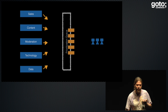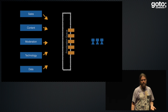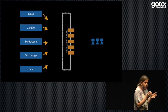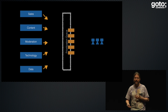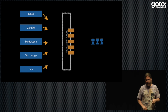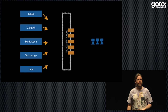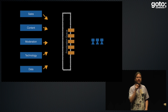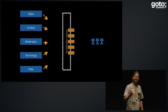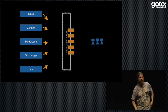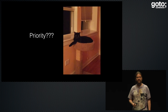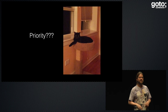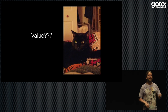We had all these people — sales, content, moderation, technology, data — all putting things into this prioritization queue. Our goal was to get the cards in order so that our small team — two seniors and a junior — could just pick off the top and start working. In our meetings we started realizing this was a problem. This whole idea of prioritization of our cards was a problem because when you talk about prioritization, you talk about what's most important, and generally what's most important is what the loudest or most highly-paid person says.